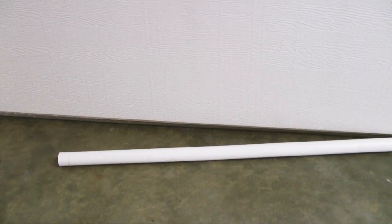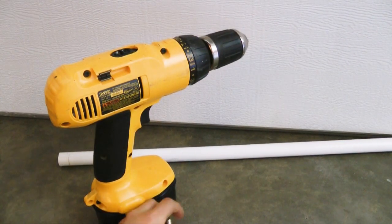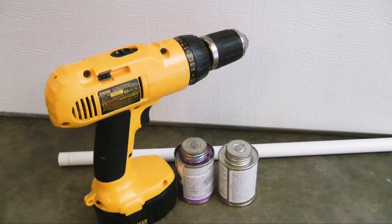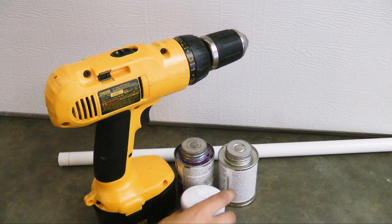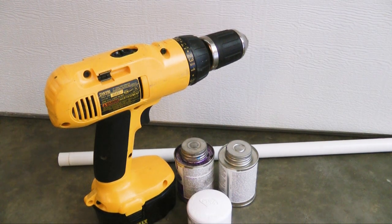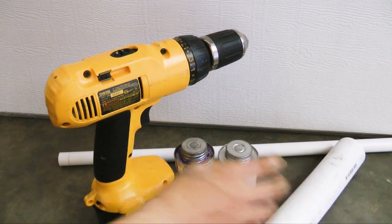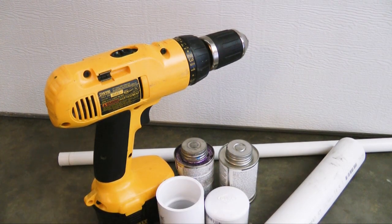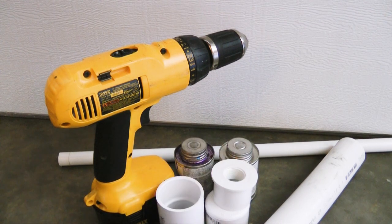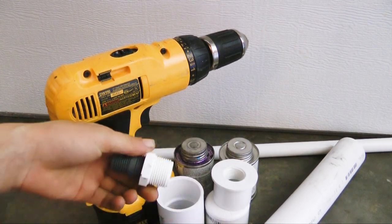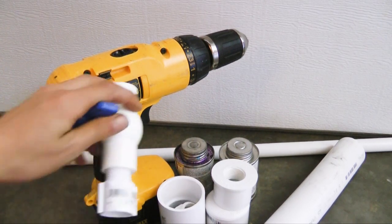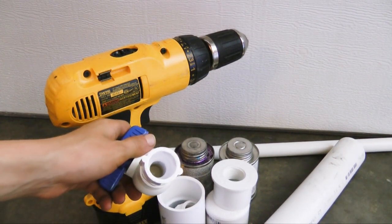Half inch PVC pipe, drill, Schrader valve, PVC cement, one and a half inch cap, one and a half inch tube one foot of it, one and a half inch coupler, one and a half inch reducer three fourths to one and a half, ball valve, and reducer.